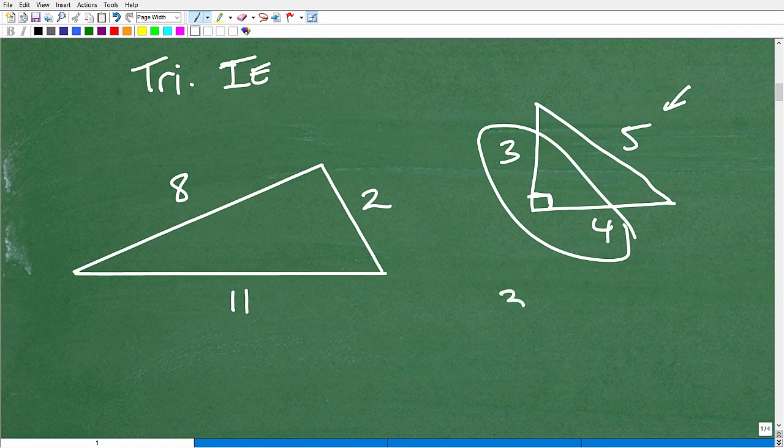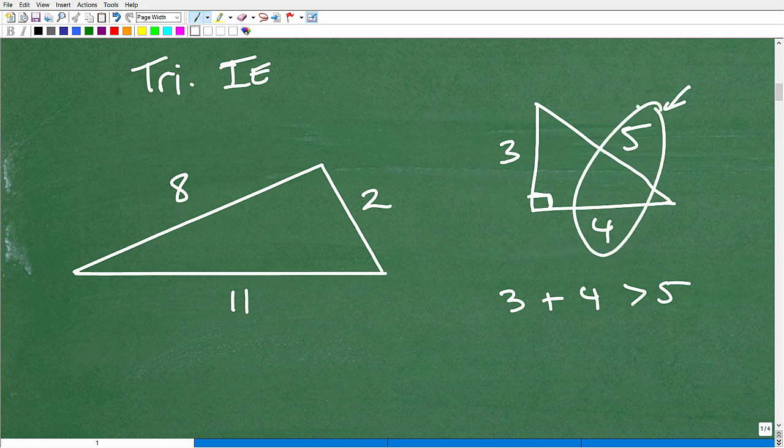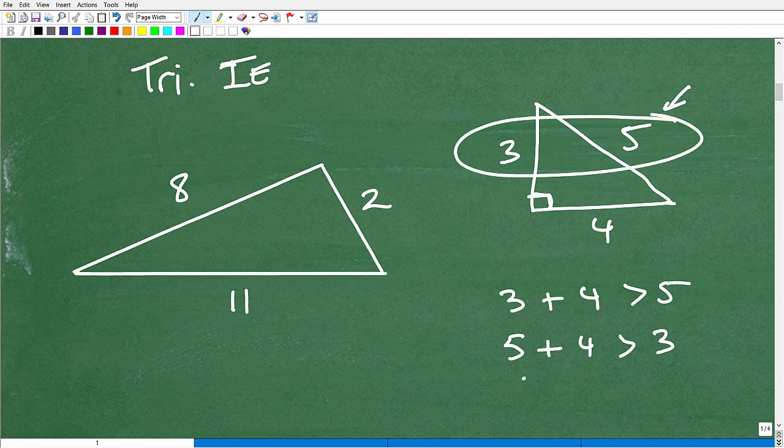Okay. So obviously seven is greater than five. That's true. Okay. But let's take this combination. All right. Five plus four. Is that greater than the one that's missing? Three. It is. Right. Nine is greater than three. That's true. And how about this one here? Five and three. Five plus three. Is that greater than the one that's missing? Four. It is. So eight is greater than four.